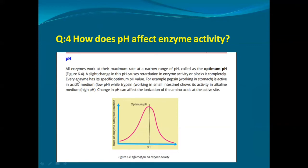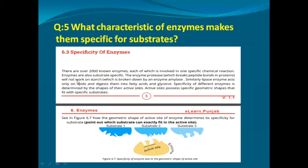Question number five: what characteristics of enzymes make them specific for a substrate? This question is basically about the specificity of enzymes — that topic needs to be explained. The answer to question number five is present on page number 112.